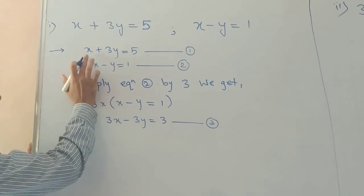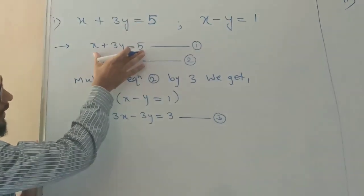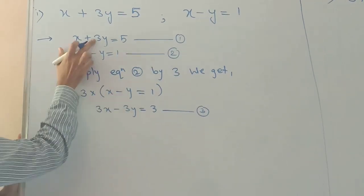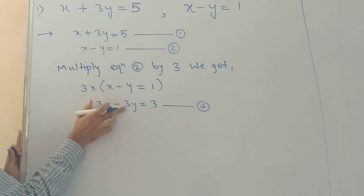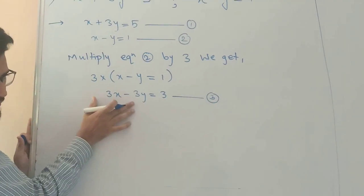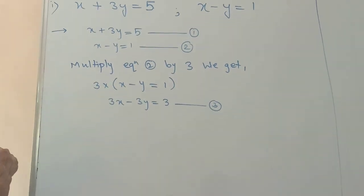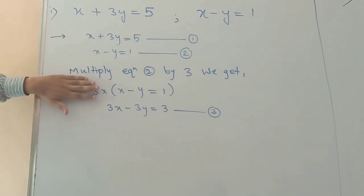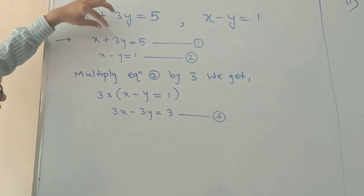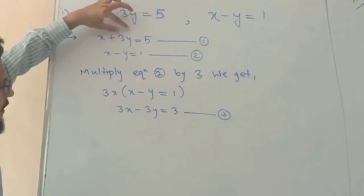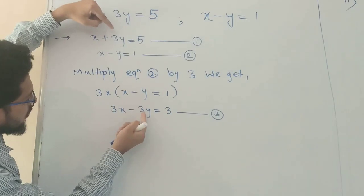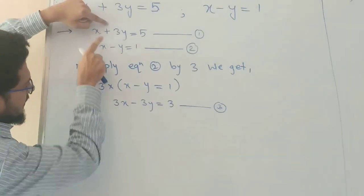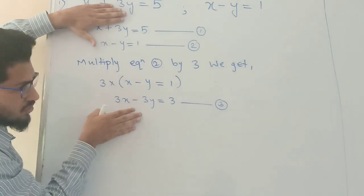Equation number 1 is x plus 3y equals to 5, and equation number 3 is 3x minus 3y equals to 3. You can see there is now the same coefficient of y — plus 3y and minus 3y. Now we check the sign before the coefficient of y. There is a plus sign in equation 1 and a minus sign in equation 3, so they are opposite signs. When the signs are opposite, we add the two equations. If the signs were the same, we would subtract.